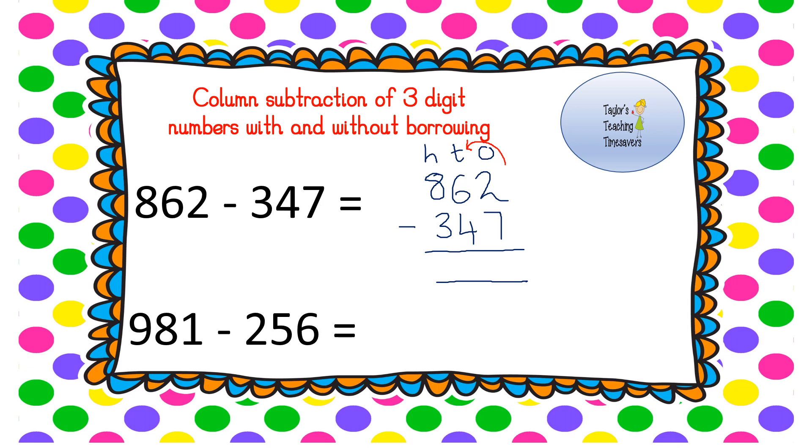So we go into our tens and we borrow a 10, so we knock our 60 down to 50, and we add that 10 so it now looks like 12 take away 7. 12 take away 7 is 5. It's now 50 take away 40, or 5 take away 4, which is 1. And it doesn't alter our hundreds again. 800 take away 300 is 500.